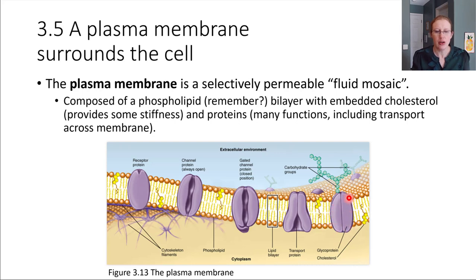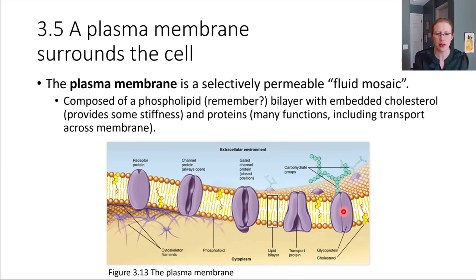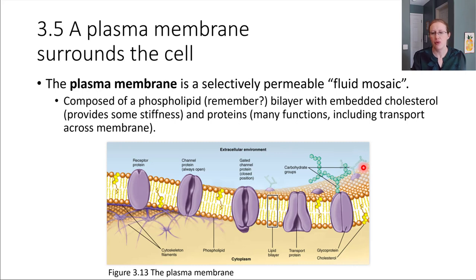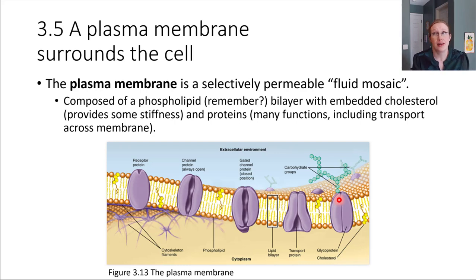We also have what are called glycoproteins — a protein that has carbohydrate attached to it, and those two things together are called a glycoprotein. Those are really important for the cell to be able to interface with, for example, the immune system. Immune cells come along and check the surface of the cells to make sure they look like they're supposed to belong there. Foreign cells would not have the same sort of signature, so that's one way that foreign cells could be detected. These proteins embedded in the membrane do lots of different things.